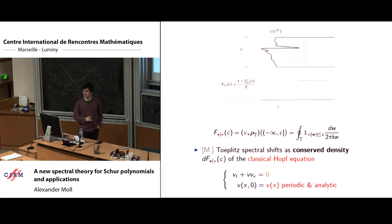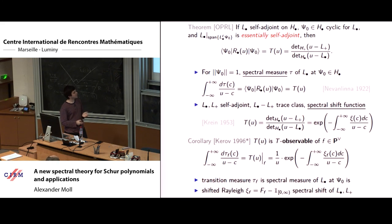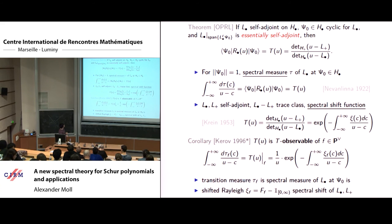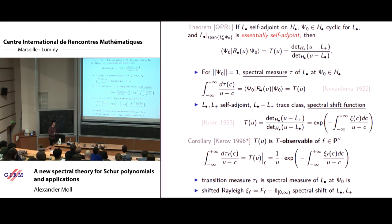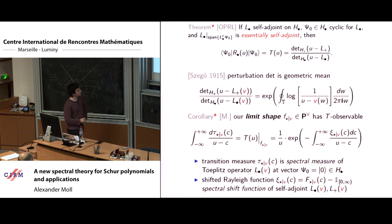How much time do I have left? About five minutes. With seven minutes I can do this thing again: go back to this big analytic setup. I put in a Toeplitz operator before and managed to recover the limit shape. This time I'm going to put in a slightly different operator — a block Toeplitz operator — and recover exactly all the combinatorics of partitions and their profiles through spectral theory.